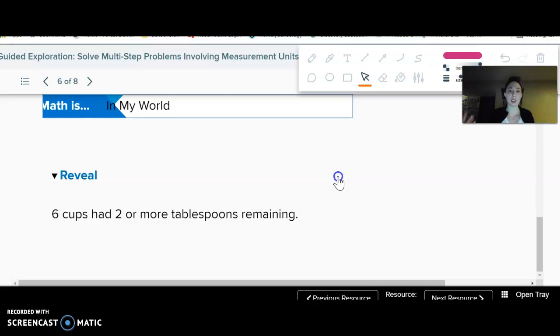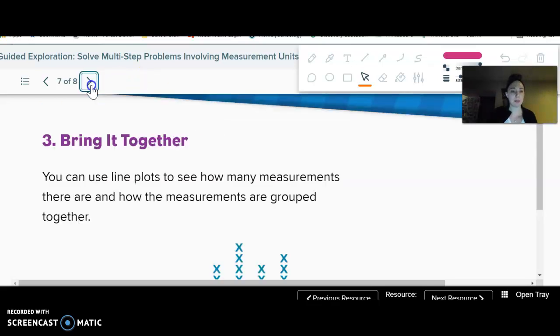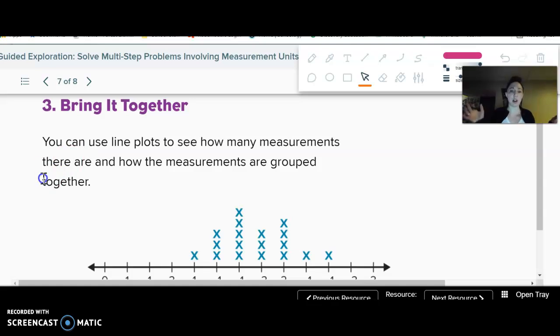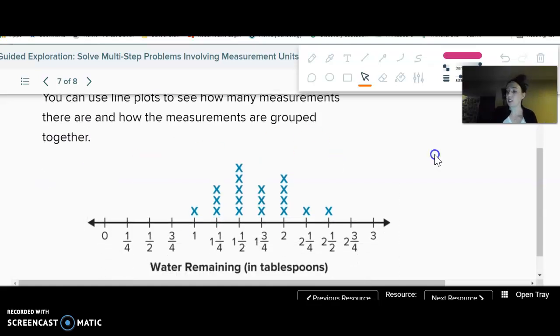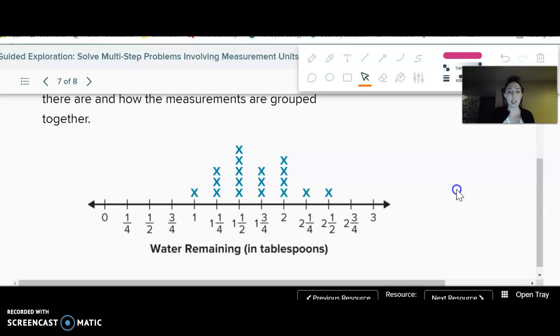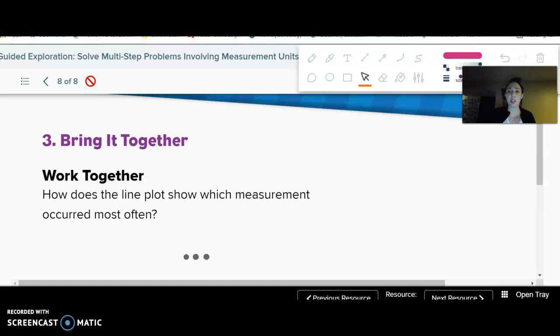So we can ask all sorts of questions about the data in line plots. In this case, how many had two or more? Well, there were six of those cups. So we can see how many measurements there are, how the measurements are grouped together. It gives us a much nicer visual because if I look at the table without sitting and counting, it's hard to tell like which was the most. But if I look at it on a line plot, I can easily see, oh, that one's the most because it's the tallest. It had the most number of cups with that amount. So visually, it can be really helpful to represent data in some sort of graph or chart versus just a table. We can still understand the data. It's just easier to see what's going on when it's presented differently.